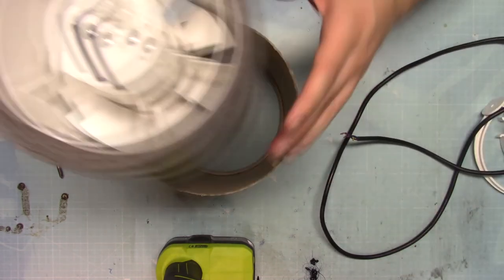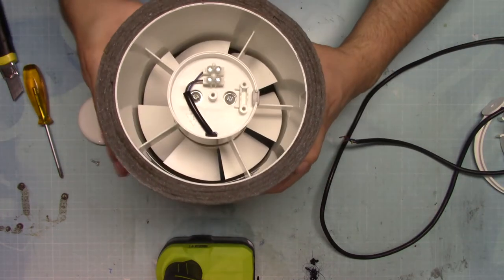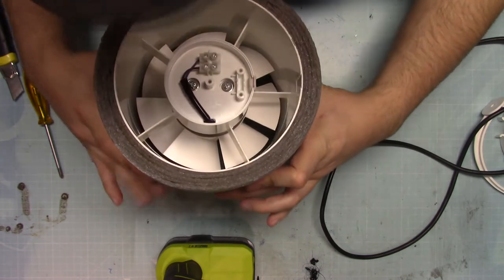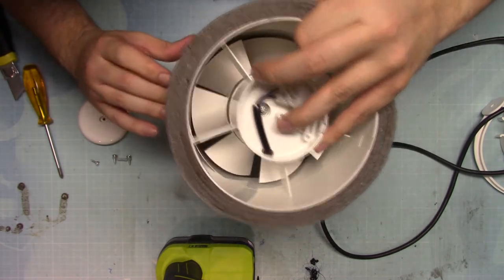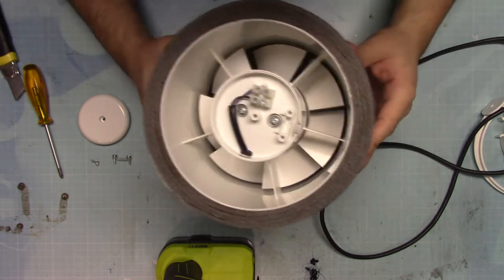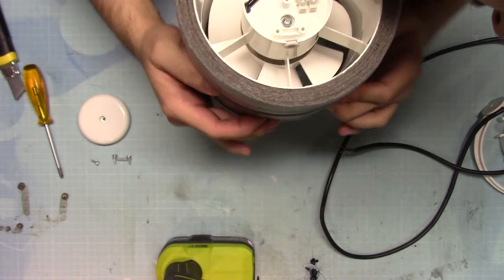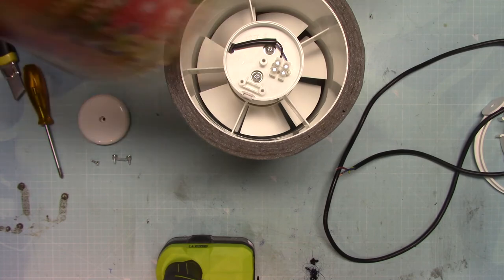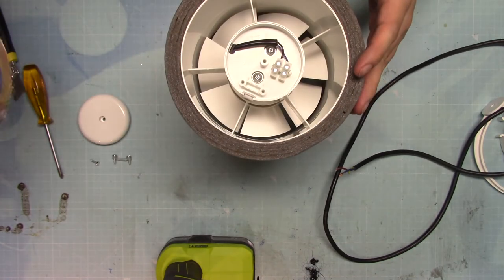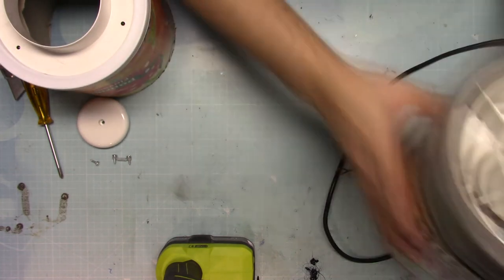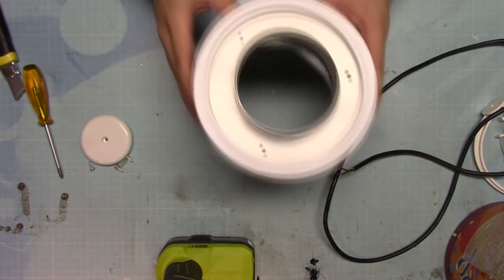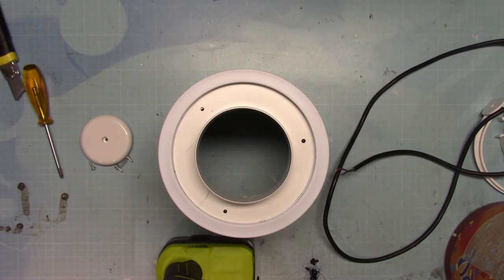It has to go in like this with the exhaust side to the filter. There it goes. Maybe I should, yes I should mount the cable screw terminal right now. So let's get one of those. I don't think that this will be sufficient but let's try it.